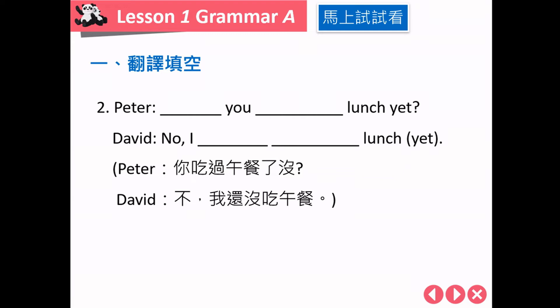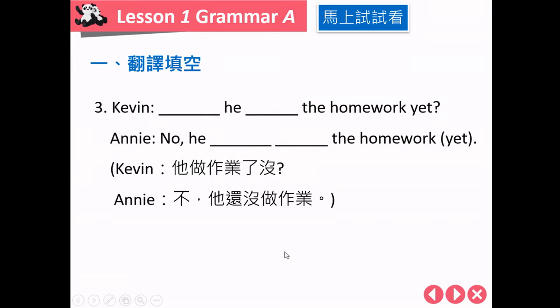第二题，一样给同学10秒钟。第一格答案应该是 have。吃过午餐了没？动词是吃，eat, ate, eaten。回答：No, I haven't eaten. 当然，had 也可以当作吃来使用。Let's read: Have you eaten lunch yet? No, I haven't eaten lunch yet.